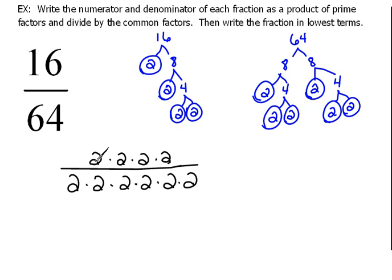Now remember, each time that we have a common factor in the numerator and the denominator, we can divide out by it. Because 2 divided by 2 is 1, 2 divided by 2 is 1, 2 divided by 2 is 1, and 2 divided by 2 is 1.